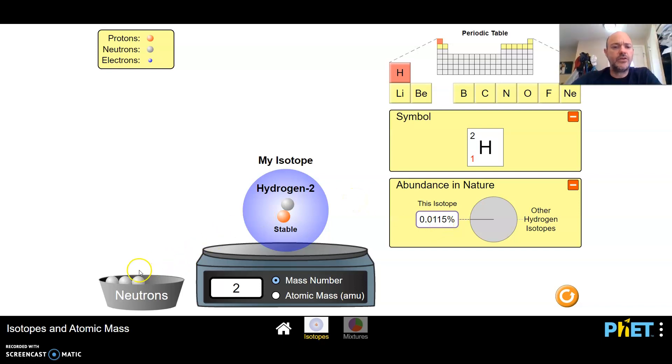You can look and go through other isotopes of hydrogen. Hydrogen three, you notice here it is an unstable isotope. So that's an important thing to know. When it says trace abundance in nature it means there's very very few atoms but there might be a few that exist.